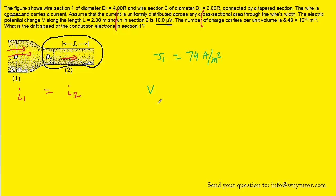Finally, the drift speed of the conduction electrons in section 1, which we can call V sub D, is equal to its current density divided by the quantity N multiplied by E. Of course, we just figured out the current density. N represents the number of charge carriers per unit volume. Now that was given to us in the question.